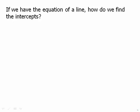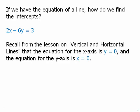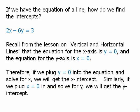If we have the equation of a line, how do we find the intercepts? Recall that the equation for the x-axis is y equals zero and the equation for the y-axis is x equals zero. So any point on the x-axis has a y-coordinate of zero. This means if we plug y equals zero into the equation, we're going to get the x-intercept.